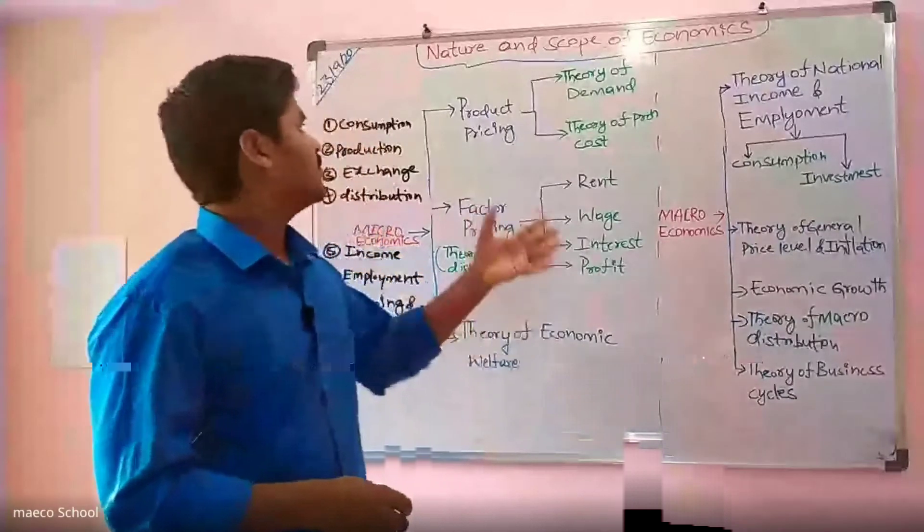Employment theory covers how employment can be addressed through government intervention. Consumption theory and investment theory are also studied — including autonomous investment, APC (average propensity to consume), MPC (marginal propensity to consume), MEC (marginal efficiency of capital), and the rate of interest.